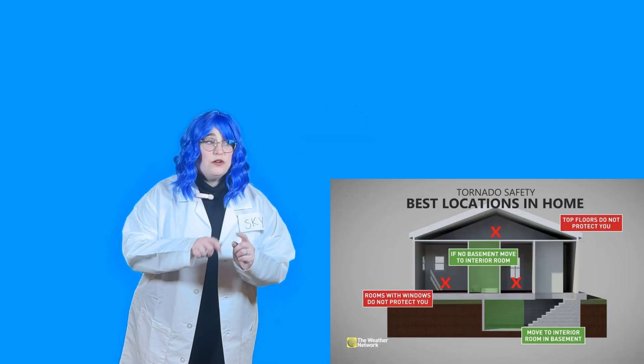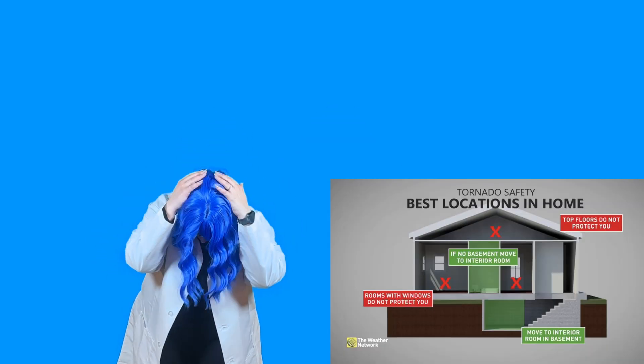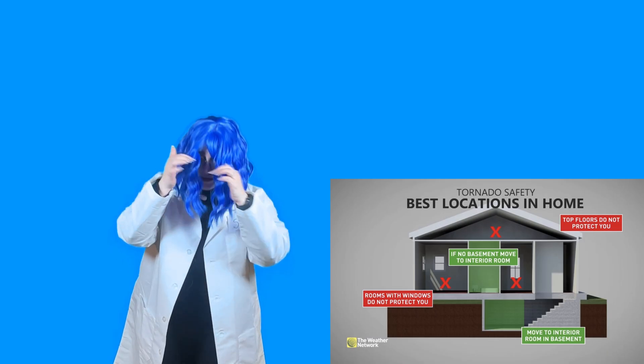If you ever hear that there's a real tornado outside, you have to get to somewhere safe. Go down into a basement or a room with no windows. Get down and cover your head and ask an adult what to do next. They'll keep you safe. Remember, tornadoes are very powerful and they spin so fast, but we know what to do to keep safe.